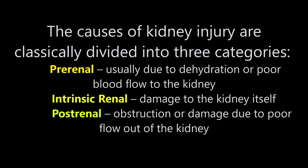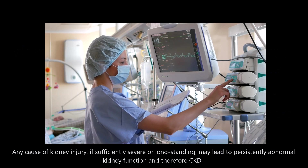The causes of kidney injury are classically divided into three categories. One, pre-renal, usually due to dehydration or poor blood flow to the kidney. Two, intrinsic renal disease — damage to the kidney itself — or three, post-renal, which is usually related to obstruction or damage due to poor outflow from the kidney itself.